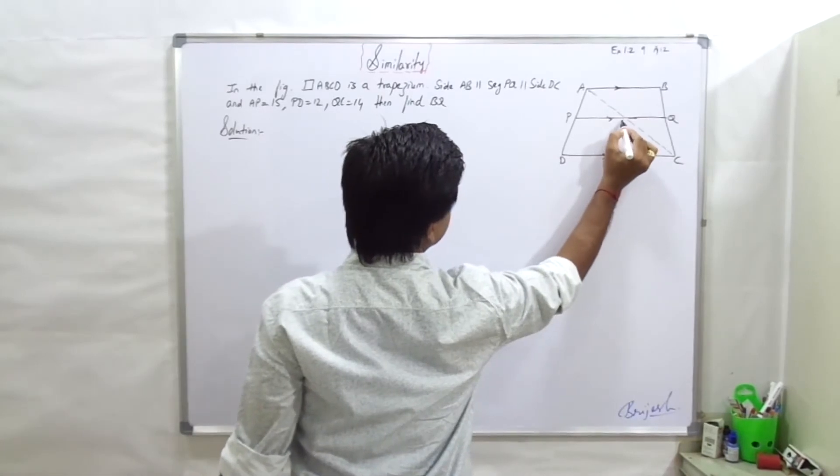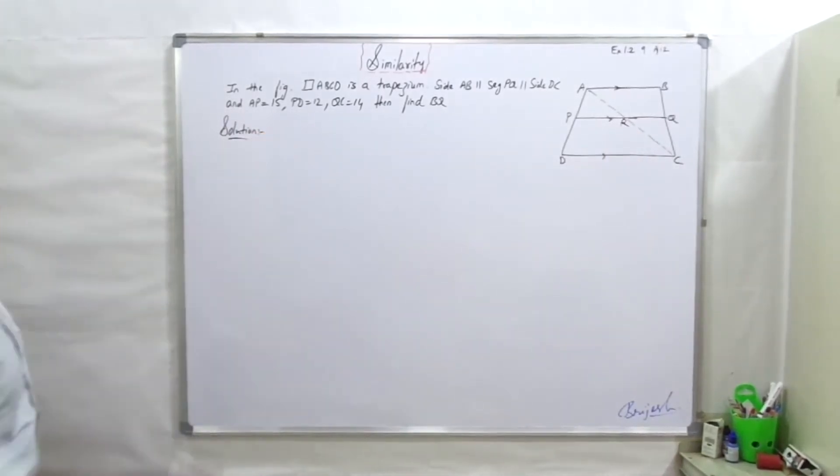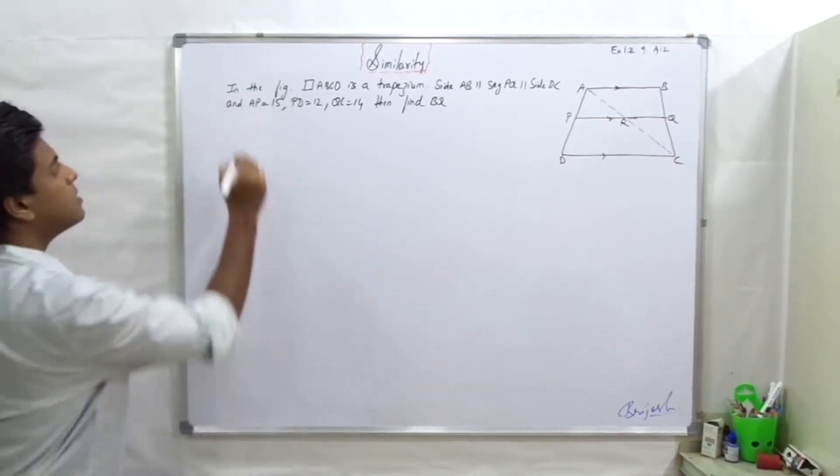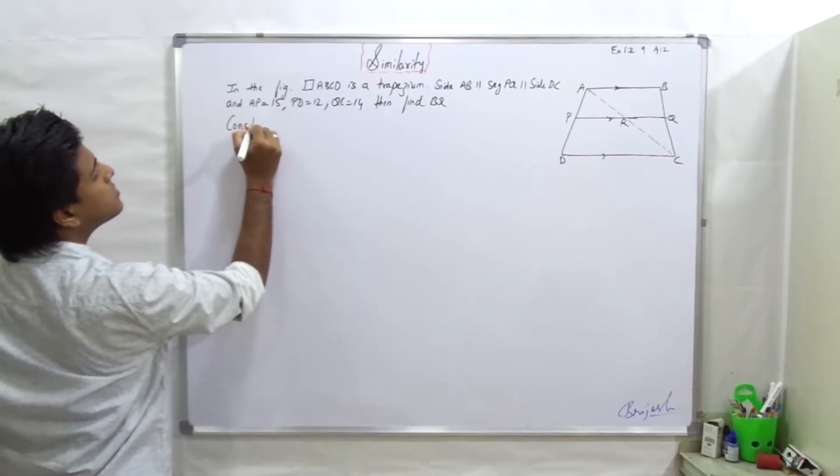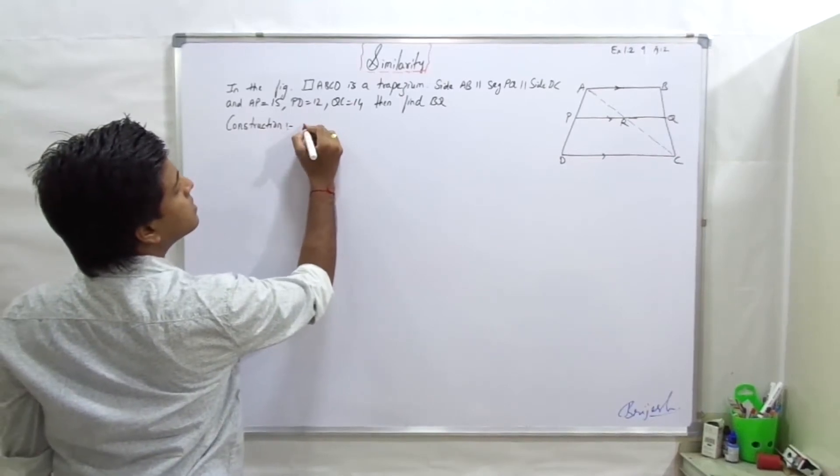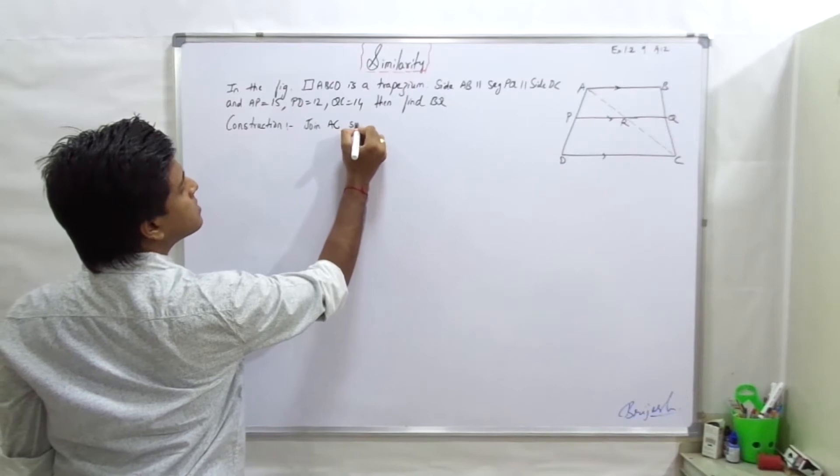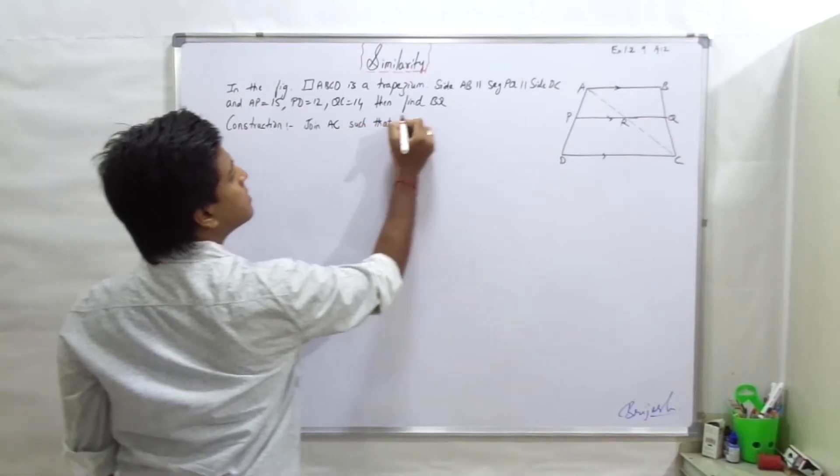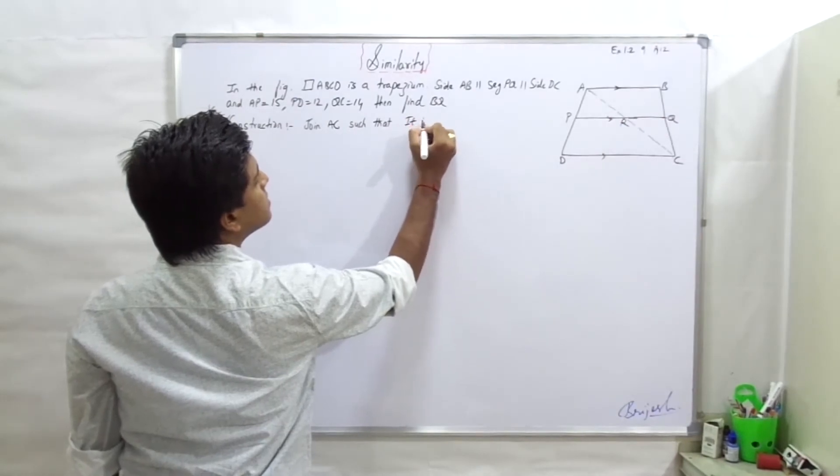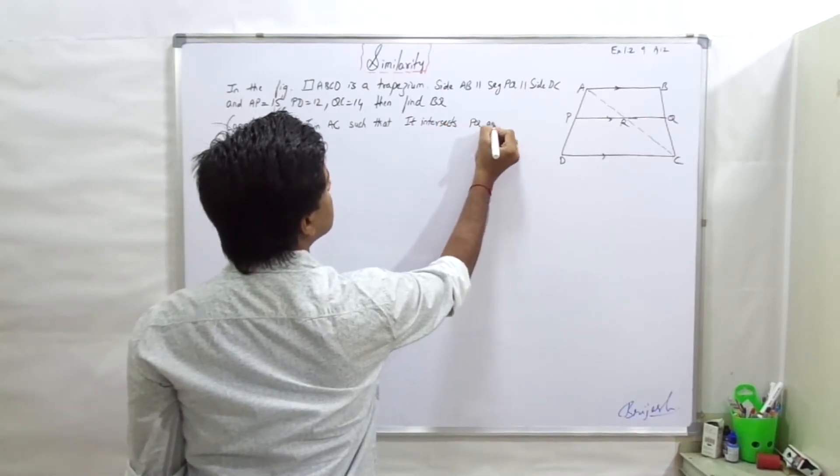So we will draw a construction, so we will write construct: join AC such that it intersects BQ at R.